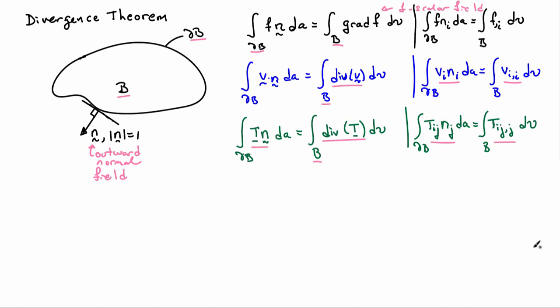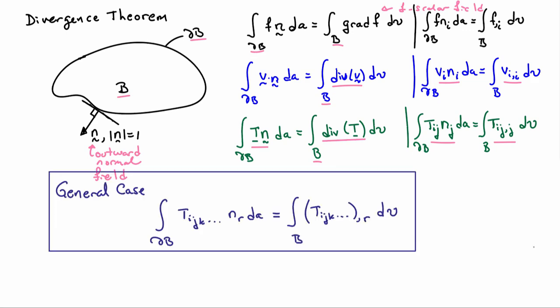So these are component expressions on the right and in the middle we have the symbolic expression so all of these relationships are various versions of a general form. So the general case here I can write as an integral over the surface of a tensor of any order so t i j k whatever it happens to be times n r so n again is the unit outward normal becomes an integral over the body of whatever I had there comma so that means partial differentiation.